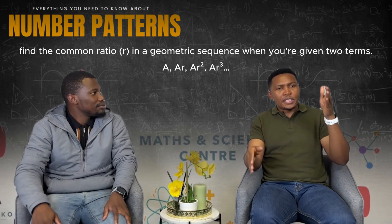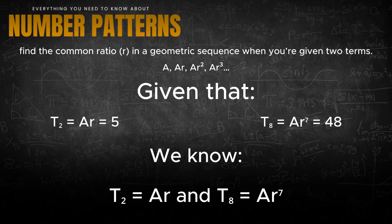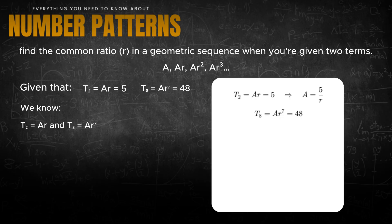Just to illustrate — if you were given the second term and the eighth term of a geometric pattern, you wouldn't otherwise be able to get the value of r. But you know T2 = ar and T8 = ar^7. So if ar = 5 and ar^7 = 48, you can make 'a' the subject, substitute it in, and get your value for r — eliminating one of the variables.